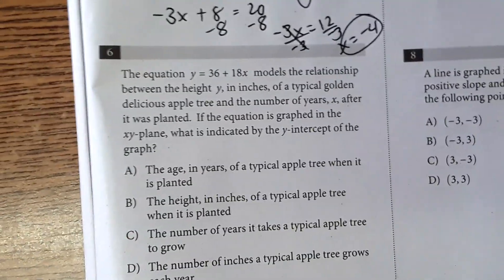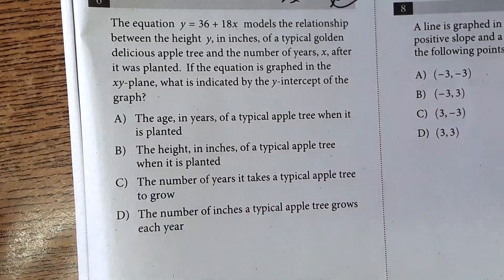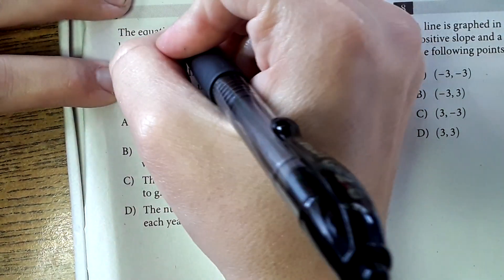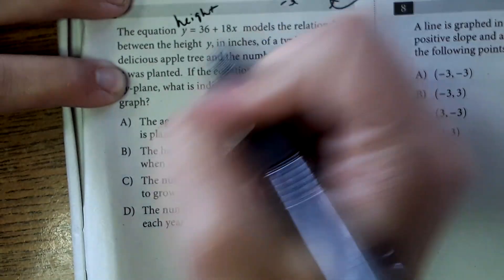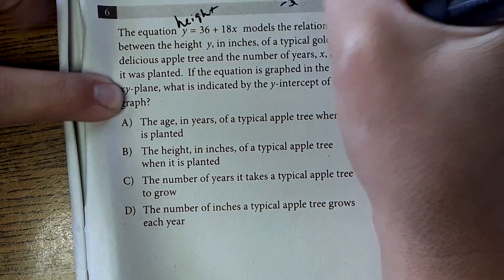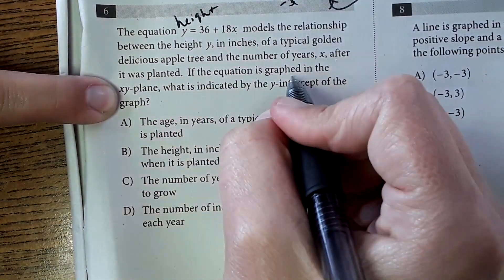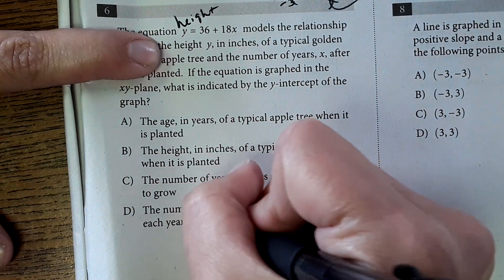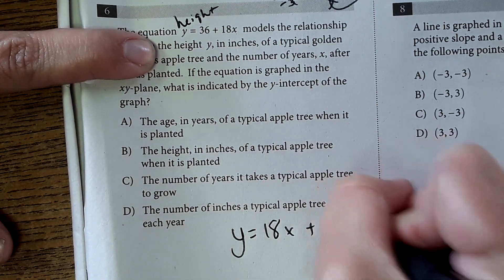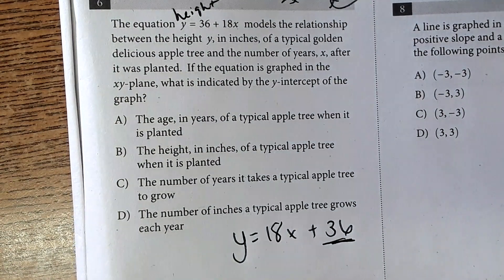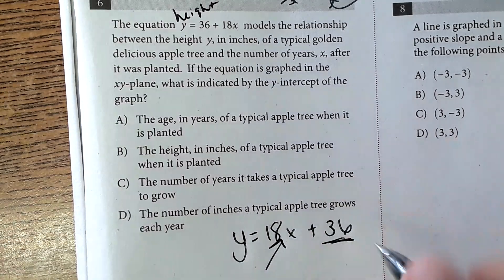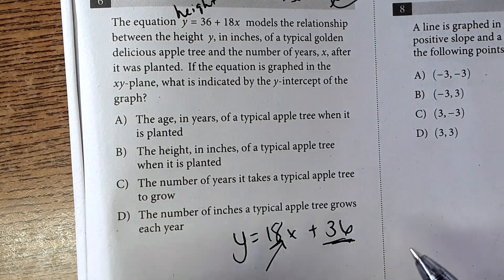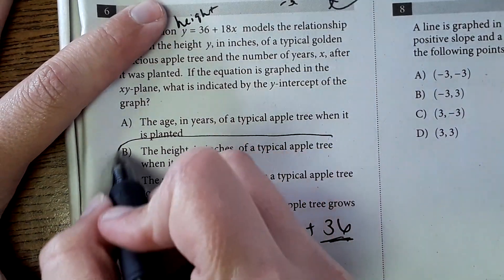Okay, moving down to number six. Number six, the equation y equals 36 plus 18x models the relationship between height y in inches of a typical golden delicious apple tree. So y is the height over here. After the number of years, it was planted. If the equation is graphed in the xy plane, what is indicated by the y-intercept of the graph? Okay, if I was to rearrange this into y equals mx plus b format, y equals 18x plus 36, it wants to know what the y-intercept indicates. In this case, we're talking about a tree and how fast it grows per year. So the y-intercept right here would be the original height and then you're adding the 18 inches each year. So we're looking for the height of a typical apple tree when it's planted.